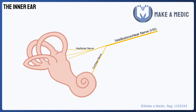These electrical impulses from the auditory system will be transmitted along the cochlear nerve, while balance information from the vestibular apparatus is carried by the vestibular nerve. These two nerves join together to form the vestibulocochlear nerve, otherwise known as the eighth cranial nerve, which then brings the information to the brain.